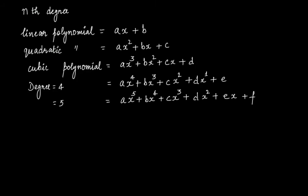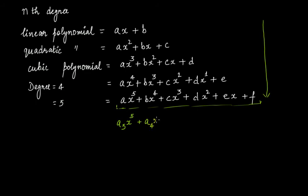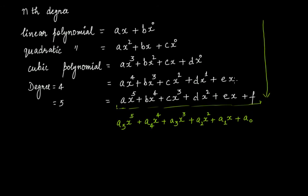Let's take this one — you can see a trend here. Let's rewrite it using subscript notation: a5 x raised to the power of 5, plus a4 x raised to the power of 4, plus a3 x raised to the power of 3, plus a2 x raised to the power of 2, plus a1 x raised to the power of 1, plus a0. Why a0? Because in the constant term, this is actually x raised to the power of 0, and x raised to the power of 0 equals 1, so we can write it as a0 times x raised to the power of 0.